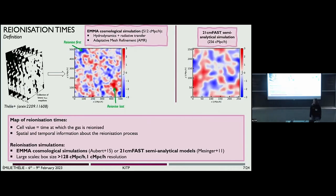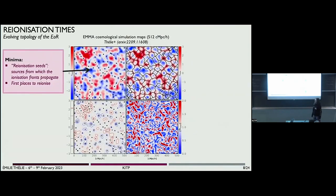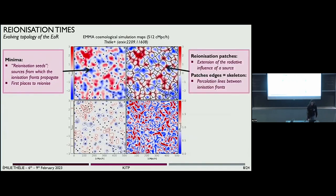This map comes from simulations — it can come from cosmological simulations like EMA, or from 21cm-fast simulations. In the studies I will mention here, I'm staying at large scale, higher than 100 Mpc/h, with a resolution of 1 Mpc/h, to get close to the resolution we will have with SKA. In this map there is a lot of physical information. If you are interested in the first places that reionize — the sources of reionization, or the so-called reionization seeds — you can look at the minima. All of the points connected to the minima with negative gradients form what we call the reionization patches, which contain information about the extension of the radiative influence of the sources.